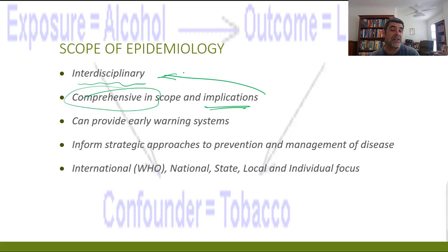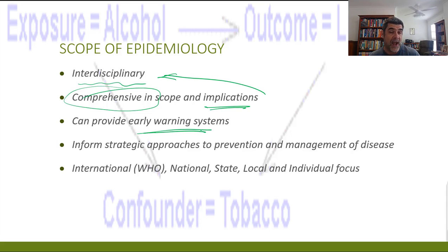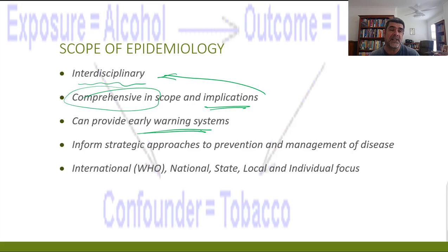Good epidemiological studies can provide early warning systems. We can actually get a sense of what might be happening if a new pathogen is introduced into a population, or if we find a factor is starting to have an impact on health rates, diseases, cancer rates, and those sorts of things. We can use some of these studies to start to get an early idea about what's going on.